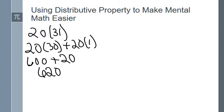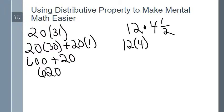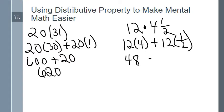Let's look at another one, maybe a little more complicated: 12 times 4½. That's not as easy to do in our heads, and can be tricky on a calculator with fractions. Using the distributive property, I can say that's the same as 12 times 4 plus 12 times ½. 12 times 4 is 48 from our times tables. And 12 times ½ is the same as 12 divided by 2, which is 6. So 48 plus 6 equals 54.